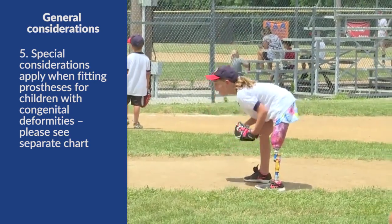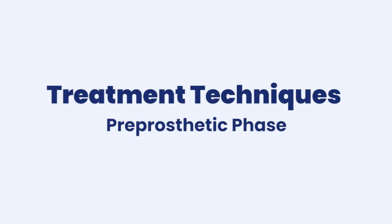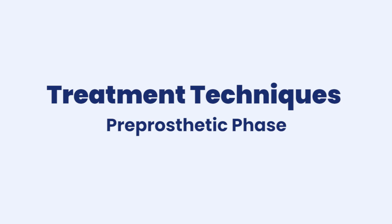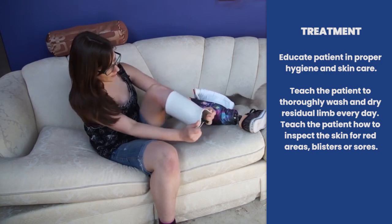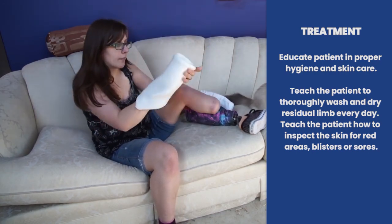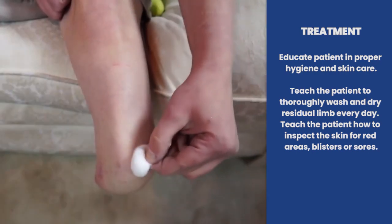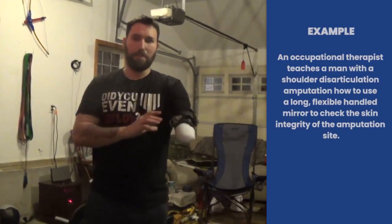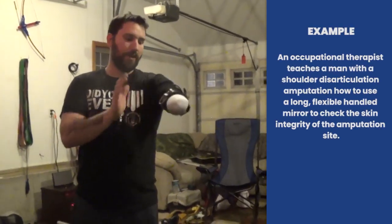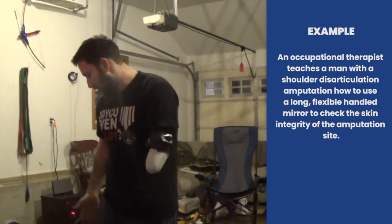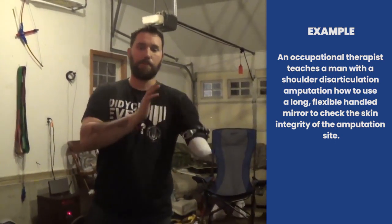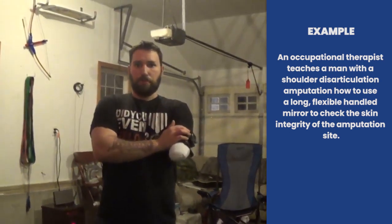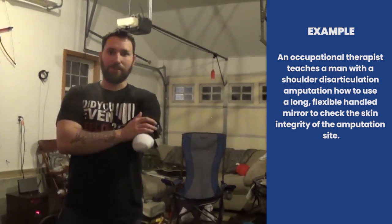Special considerations apply when fitting the prosthetic for children with congenital deformities. Regarding treatment techniques in the pre-prosthetic phase, we want to educate about hygiene and skin care. We teach the patient to thoroughly wash and dry the residual limb every day and inspect the skin for any red areas, blisters, or sores. For example, an OT teaches a man with a shoulder disarticulation amputation how to use a long flexible-handled mirror to check the skin integrity of the amputation site.